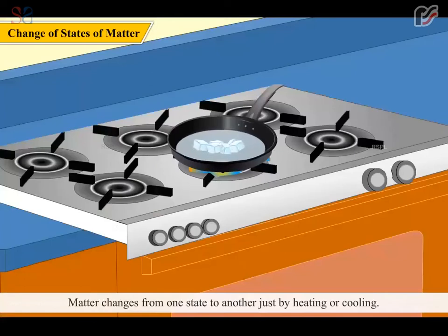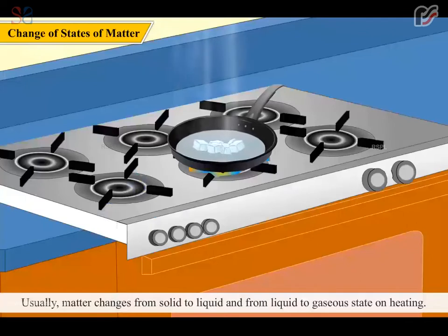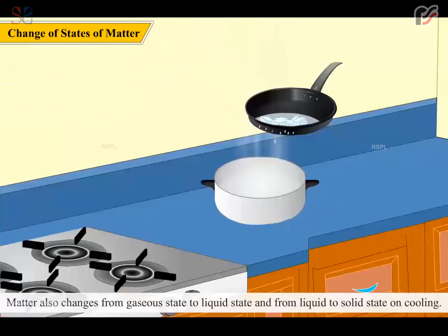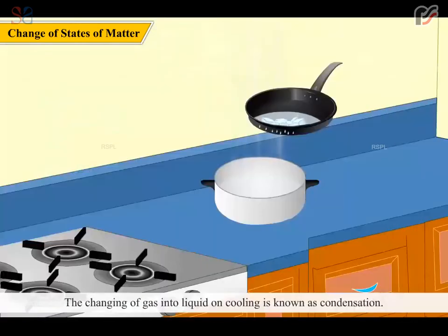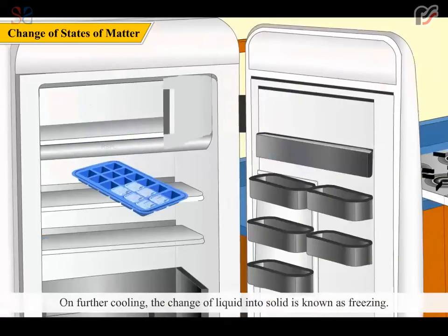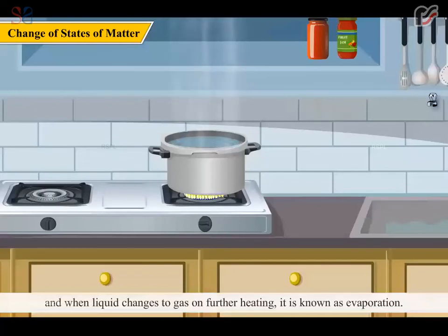Matter changes from one state to another just by heating or cooling. Usually, matter changes from solid to liquid and from liquid to gaseous state on heating. Matter also changes from gaseous state to liquid state and from liquid to solid state on cooling. The changing of gas is known as condensation. On further cooling, the change of liquid into solid is known as freezing. Changing of solid into liquid on heating is known as melting. And when liquid changes to gas on further heating, it is known as evaporation.